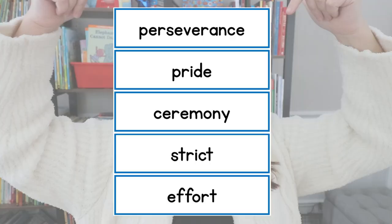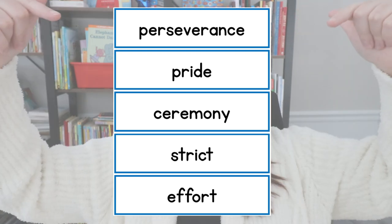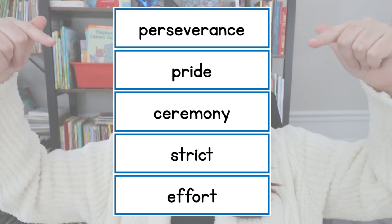For your freebie this month I wanted to bring in some integrated vocabulary. I made this little freebie with five different words you can use to talk about the Olympic Games and the athletes: perseverance, pride, ceremony, strict, and effort. If you watched my how-to-teach vocabulary video in K-2, then you know vocabulary is much more important to students when it's integrated into what they're actually learning. So if you are talking about the Olympic athletes, you can use these words, give students definitions, have them use them in sentences, and it will stick with them a lot better than explaining them without any context.